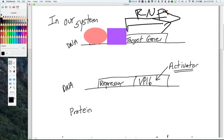So if the fusion protein is bound here, then you get transcription. So essentially, it's the opposite of what happens in the bacterial system.